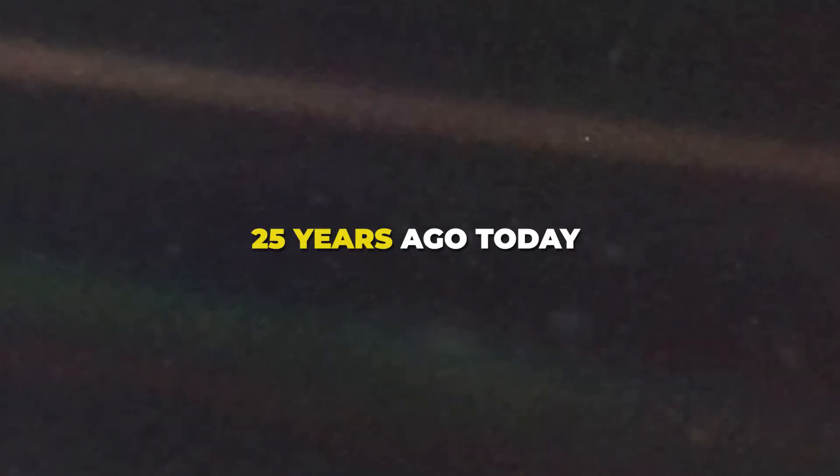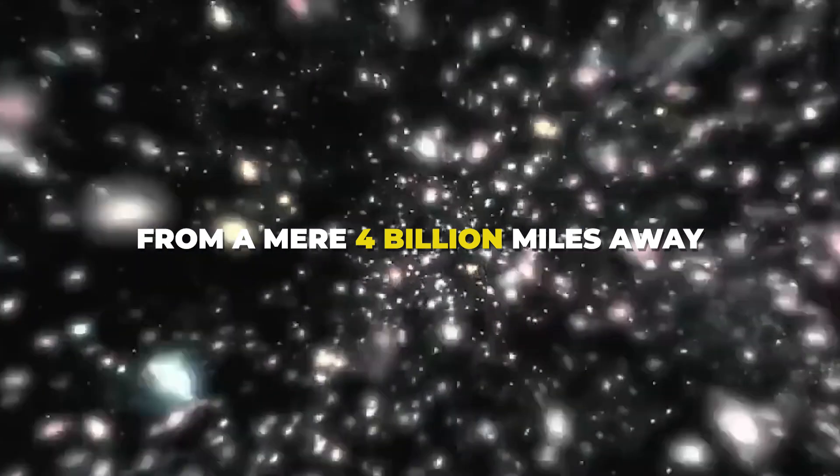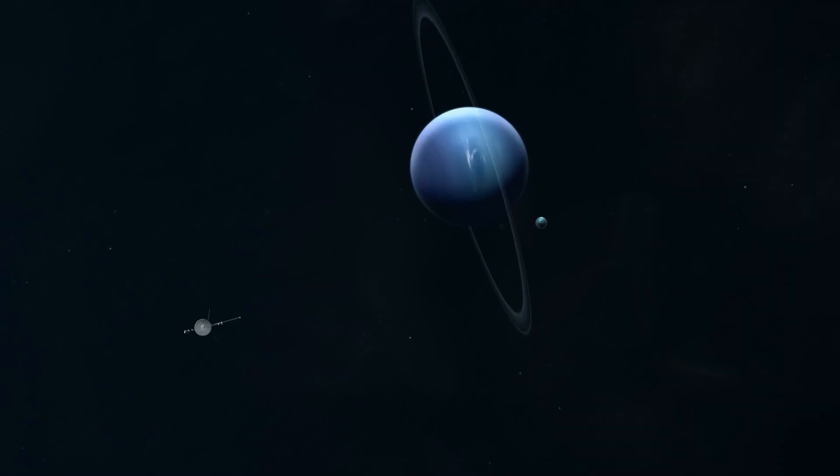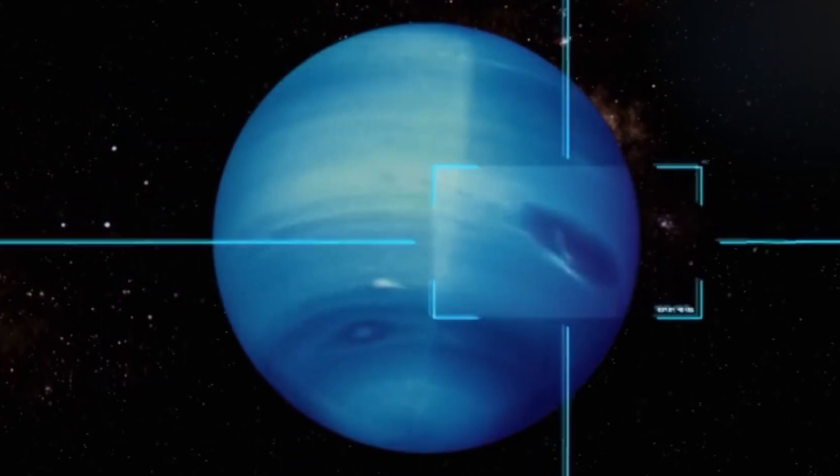25 years ago today, a Valentine's Day gift from a mere 4 billion miles away, apparently known as the pale blue dot, was taken by the Voyager 1 spacecraft. On August 25th, 1989, Voyager made an impossible discovery through a historic exploration of Neptune, marking the first spacecraft visit to the distant planet.